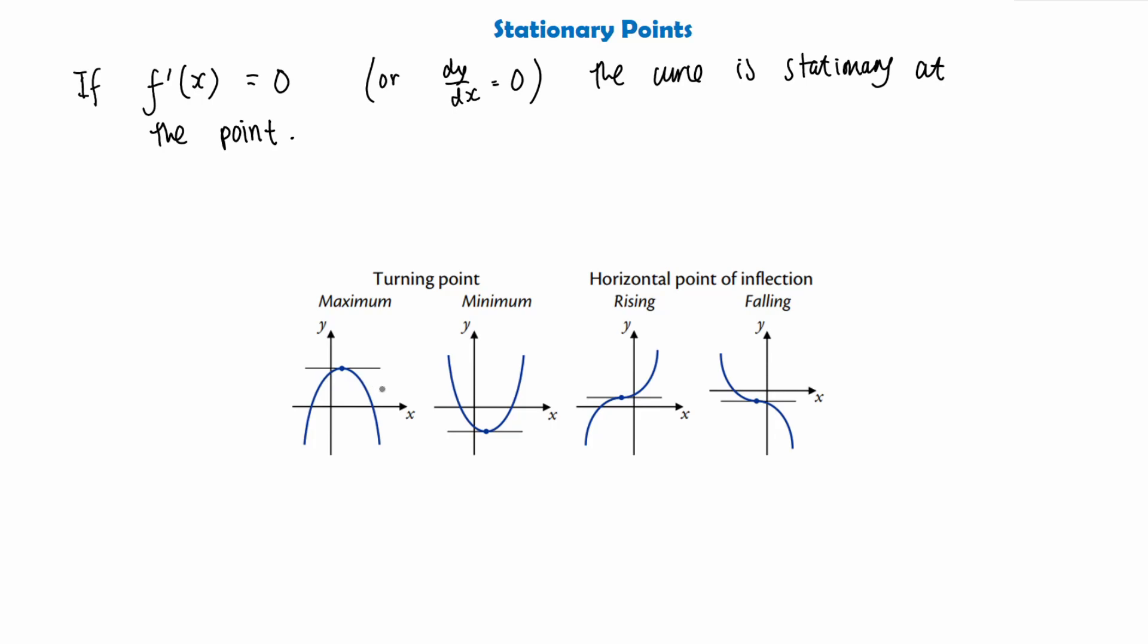We have the minimum turning point stationary point which is going to have gradient 0, as we can see by the tangent at this point.